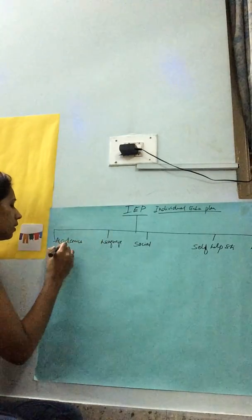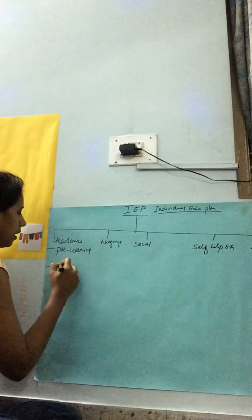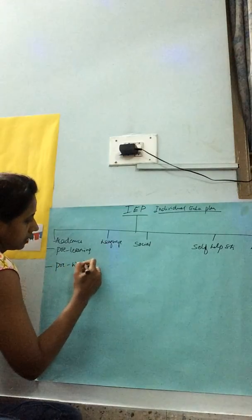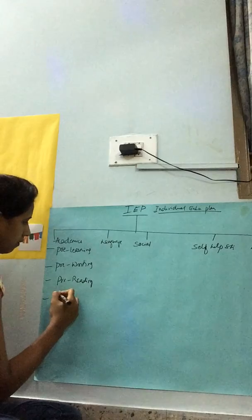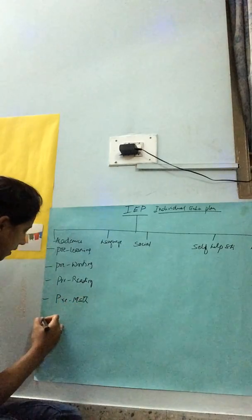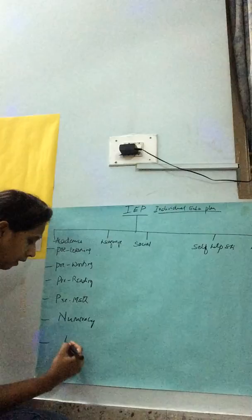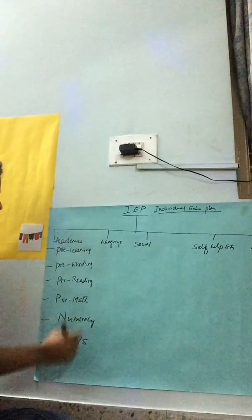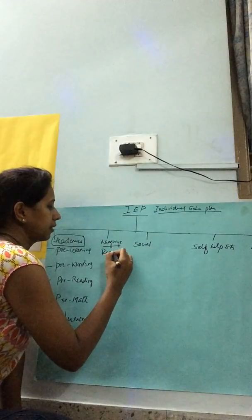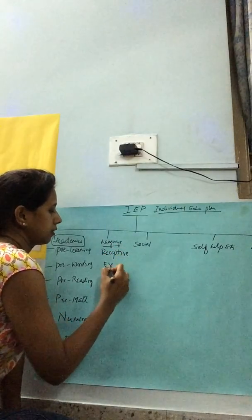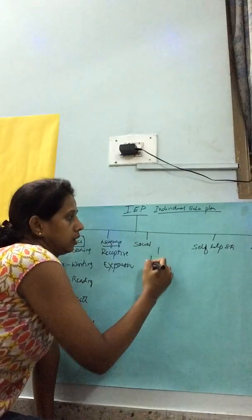Under academics, we have pre-learning, pre-writing, pre-reading, pre-math, numeracy, and EVS. Those are the broad categories under academics. Under language, we have receptive and expressive. Coming to social skills, we have play skills.